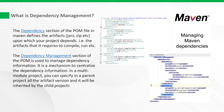What is dependency management? The dependency section of the POM file in Maven defines the artifacts upon which your project depends — that is, the artifacts that it requires to compile, run, etc. The dependency management section of the POM is used to manage dependency information. It is a mechanism to centralize dependency information. In a multi-module project, you can specify in a parent project all the artifact versions, and they will be inherited by the child projects.